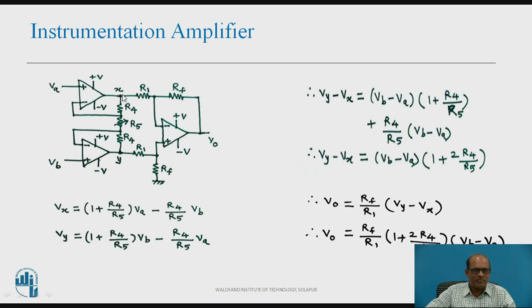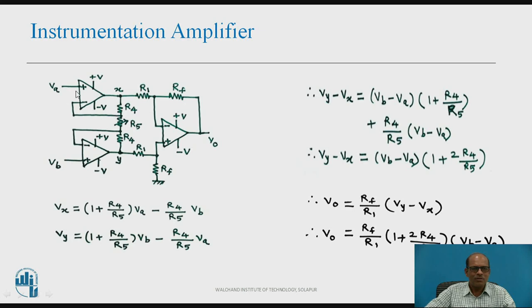Voltage at point X is due to voltages phi A and phi B. Using the superposition theorem: when phi A is acting alone and phi B is grounded, due to virtual ground the inverting terminal of the lower op-amp goes to ground, and the upper op-amp acts as a non-inverting amplifier. Therefore phi X equals (1 + R4/R5) × phi A. When phi B is acting alone and phi A is grounded, the upper amplifier acts as an inverting amplifier, giving output of −(R4/R5) × phi B.